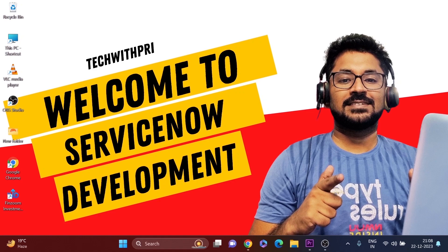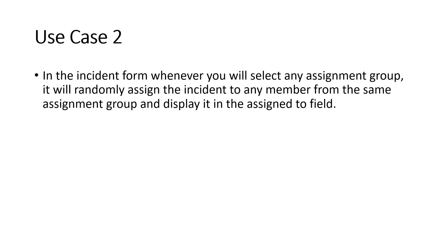I've divided it into three videos so you also get time to practice in your PDI, try changing values or situations on your own — that's a very important habit. So I'll jump straight into use case number two. In the incident form, whenever you select any assignment group, it will randomly assign the incident to a member from that group and display it in the assigned-to field. That's both complex and interesting, so let's go to my PDI.